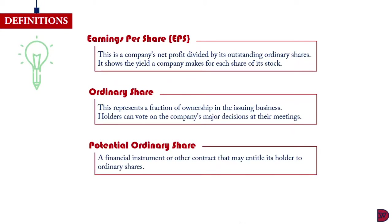Potential Ordinary Shares. This is a financial instrument or other contract that may entitle its holder to ordinary shares. Examples could be convertible debt, convertible preference shares, share warrants, share options, share rights, employee stock purchase plans, contractual right to purchase shares.